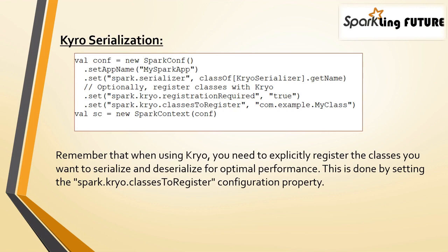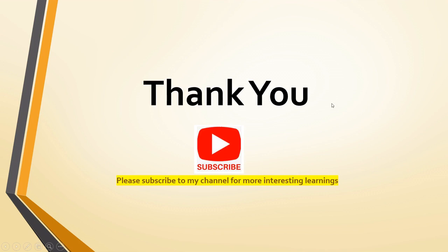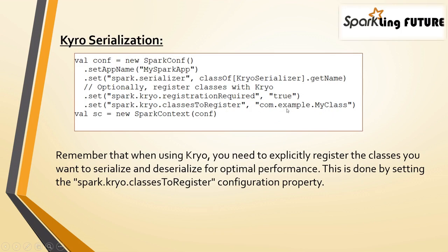Here is a sample Scala code showing how to enable Kryo serialization in Apache Spark. When creating the SparkConf, you use the set method to specify configuration settings. You set spark.serializer to the class of KryoSerializer using KryoSerializer.class.getName. Optionally, if class registration is required, you can set it to true; otherwise false. You can then mention the class name you want to register, and with that configuration, you create the SparkContext.